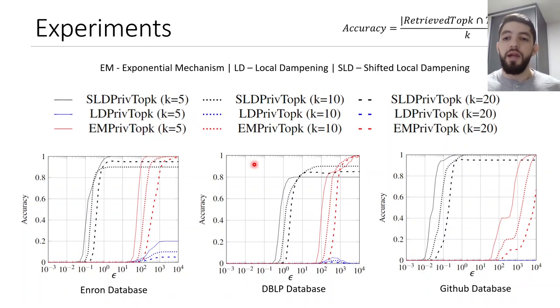We tested three mechanisms: the exponential mechanism em-priv-top-k in red, the local dampening mechanism in lg-priv-top-k in blue, and the shifted local dampening mechanism in slg-priv-top-k in black. We tested for k equals 5, 10, and 20 for the datasets enron, dblp, and github database.